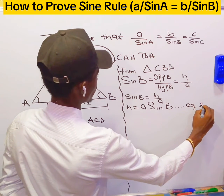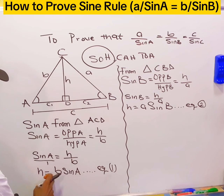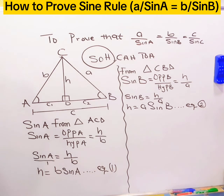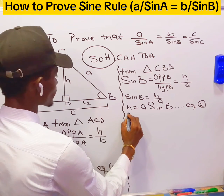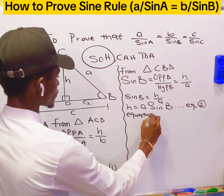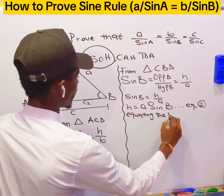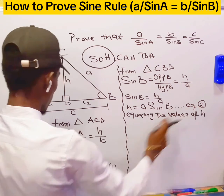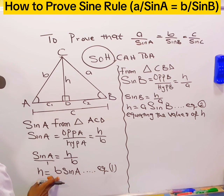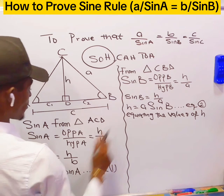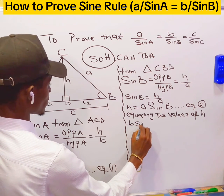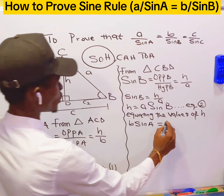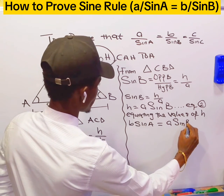Let this be equation 2. Now we have equation 1 as H equal to b·sin A, and equation 2 as H equal to a·sin B. Let's equate the value of H from equation 1 and equation 2: b·sin A is equal to a·sin B.